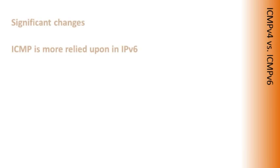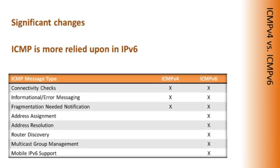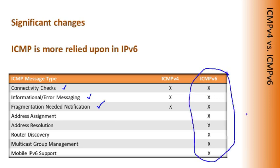Something else I want you to be aware of is that in IPv6 we are going to have a dramatic increase in the reliance on ICMP. In version 4 we used ICMP for things like basic connectivity checking with ping, informational and error messaging, and fragmentation notification. But in IPv6 it takes on a much larger role — helping with address assignments, address resolution, the discovery of routers, multicast group management, and mobile IPv6. So ICMP takes on a much larger role in the version 6 world.